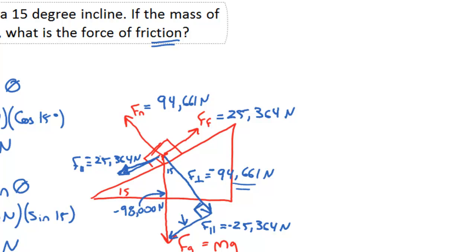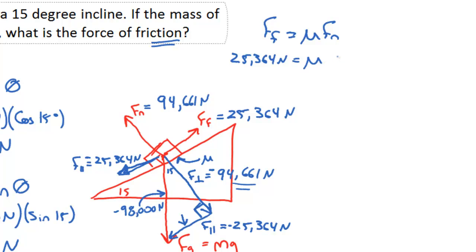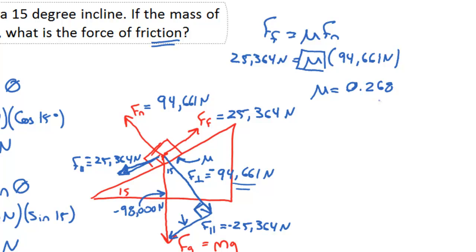Let's take it one step further and find the coefficient of friction. Using the formula Ff = μ × FN, we have 25,364 newtons equals μ times 94,661 newtons. Dividing 25,364 by 94,661 and solving algebraically gives a coefficient of friction of 0.268.